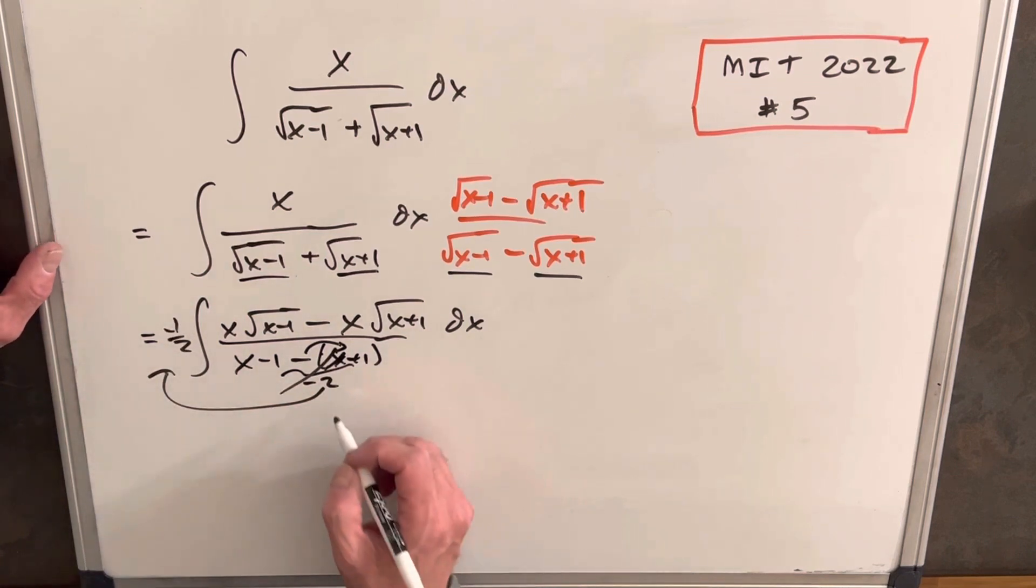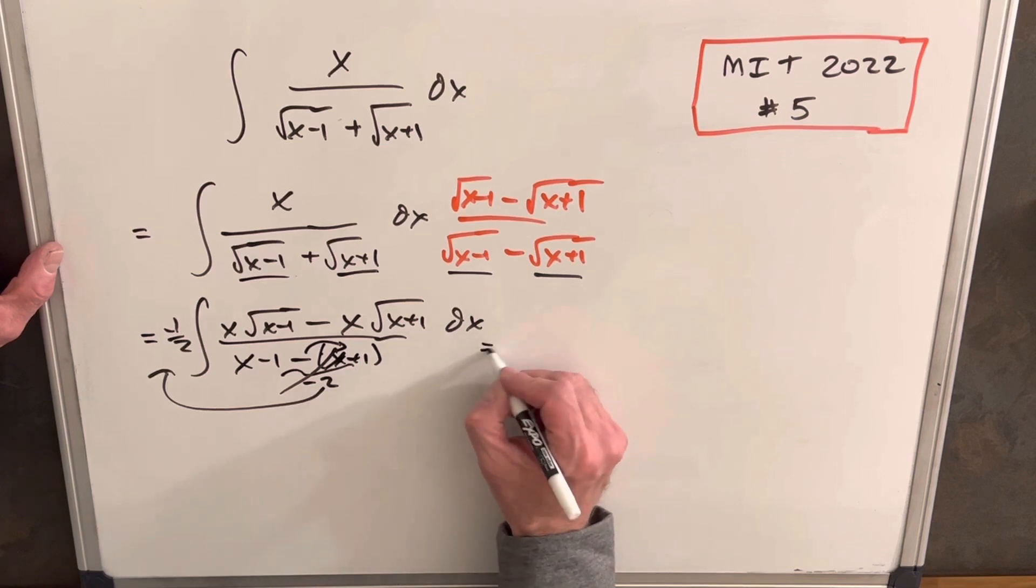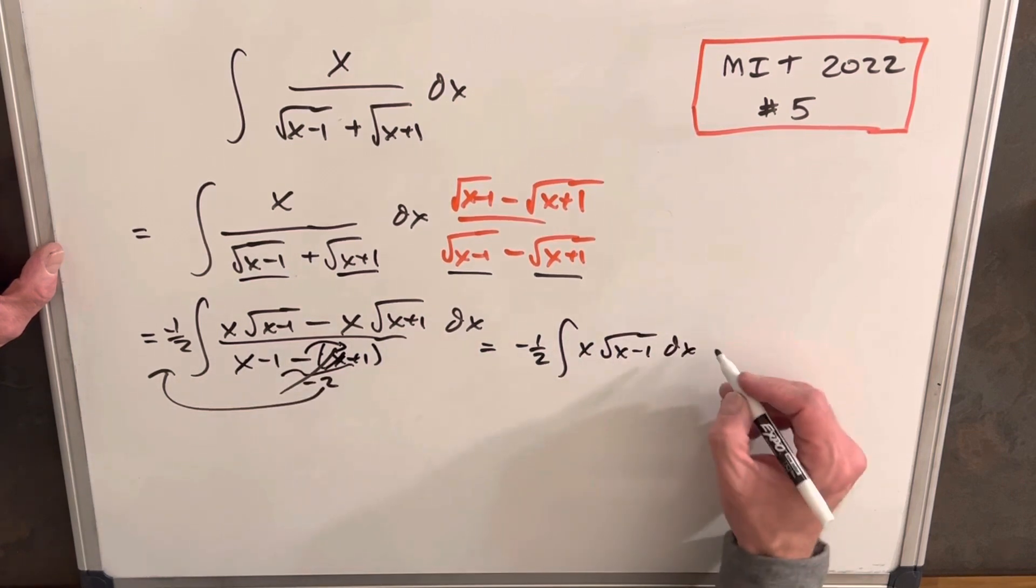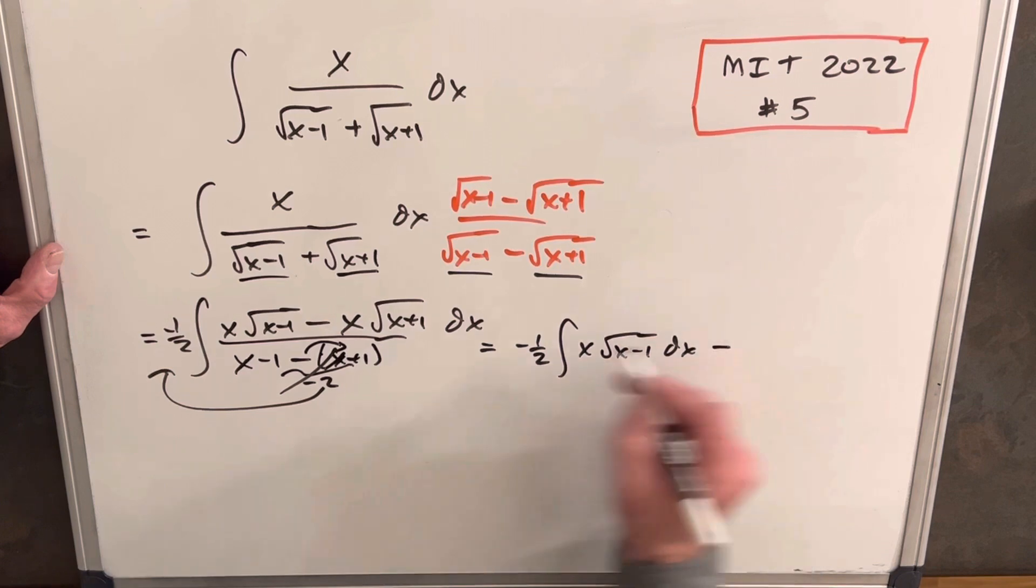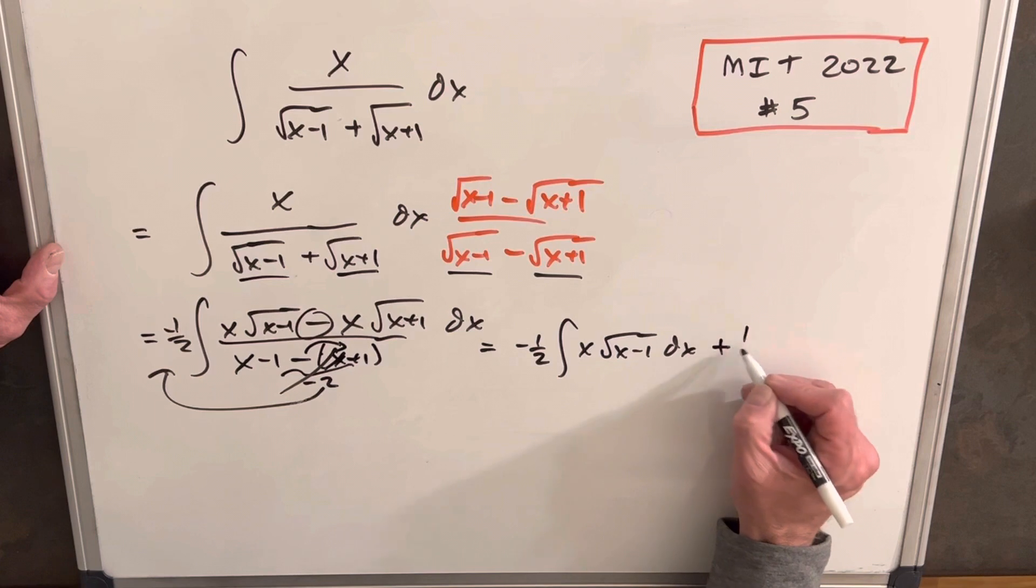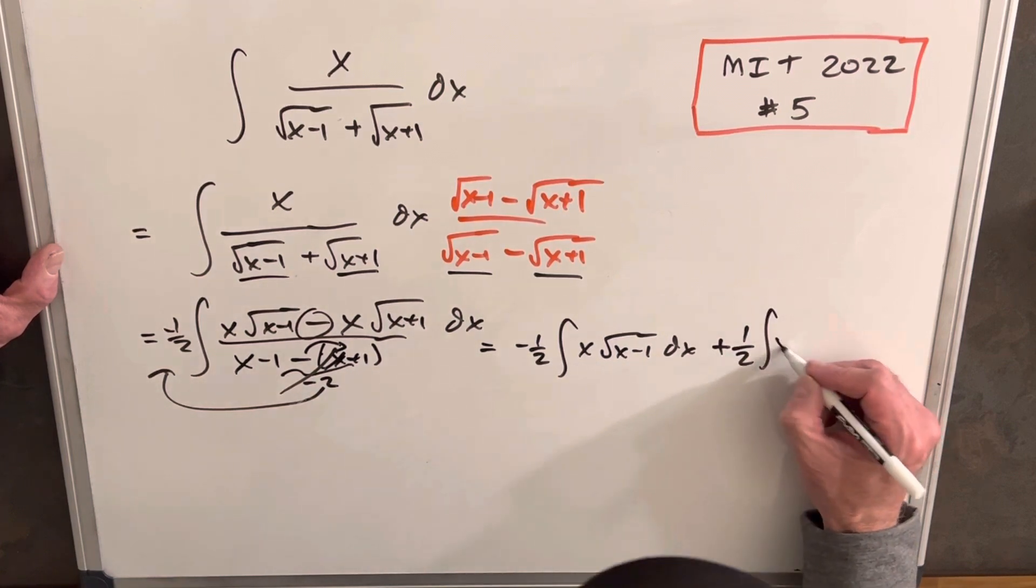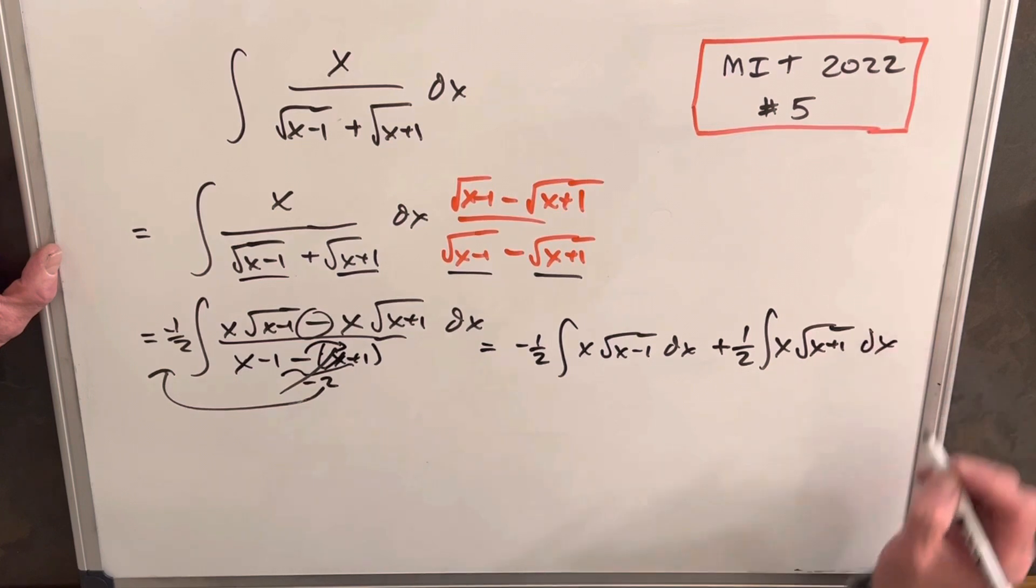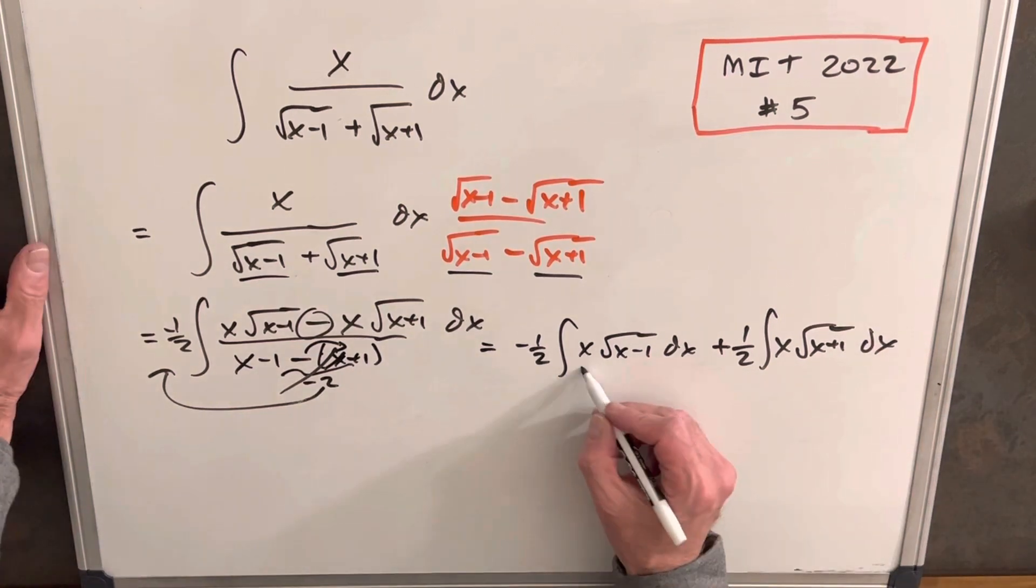So then let's rewrite this so we don't have such a crazy mess over here. So we're going to have minus 1 half. And I'm going to split this into two separate integrals. x square root of x minus 1 dx. And then the second integral, we have this minus sign, but when we multiply minus 1 half, it's going to become a plus. We're going to have plus 1 half, x square root of x plus 1 dx. And these integrals really aren't too bad separated like this.